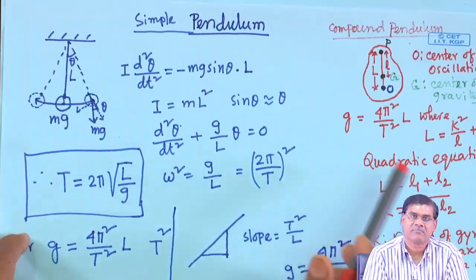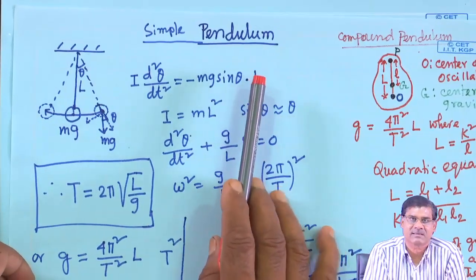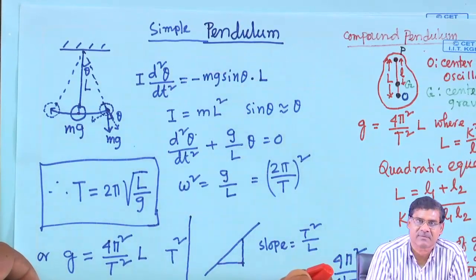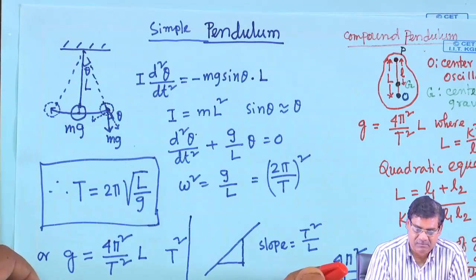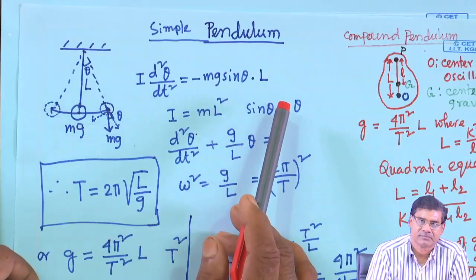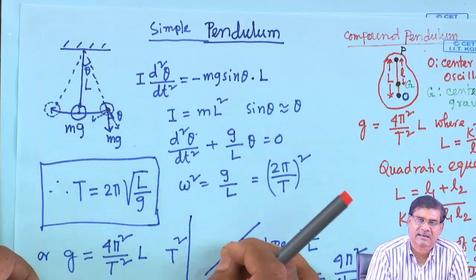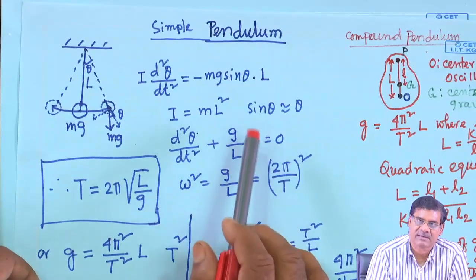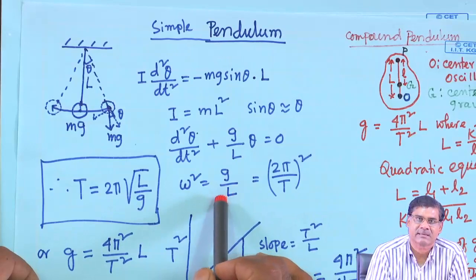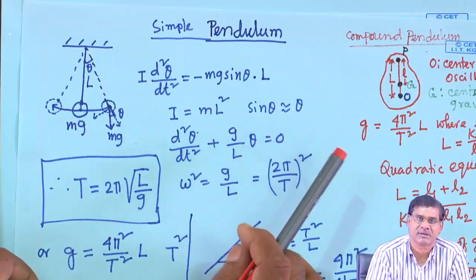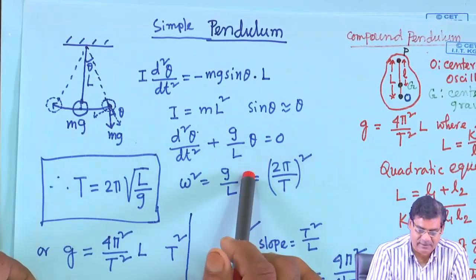Next, the simple pendulum. Although we did not demonstrate this in our laboratory — most of you would have done it in class 12 — the simple pendulum is used to measure the acceleration due to gravity g. Using this simple experiment, one can find out this universal constant very accurately.